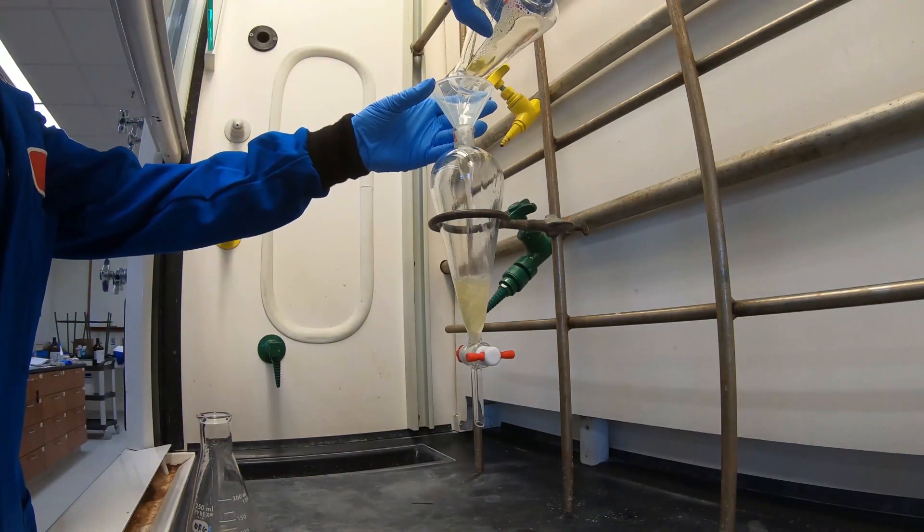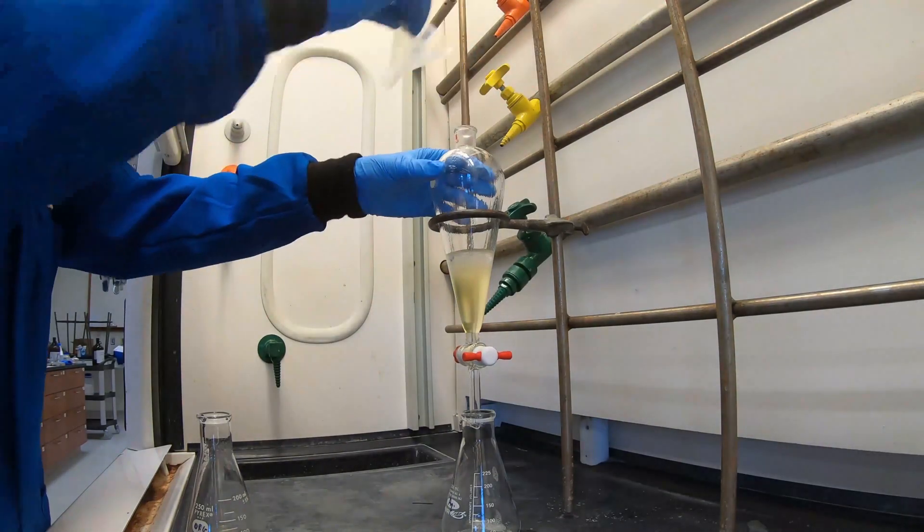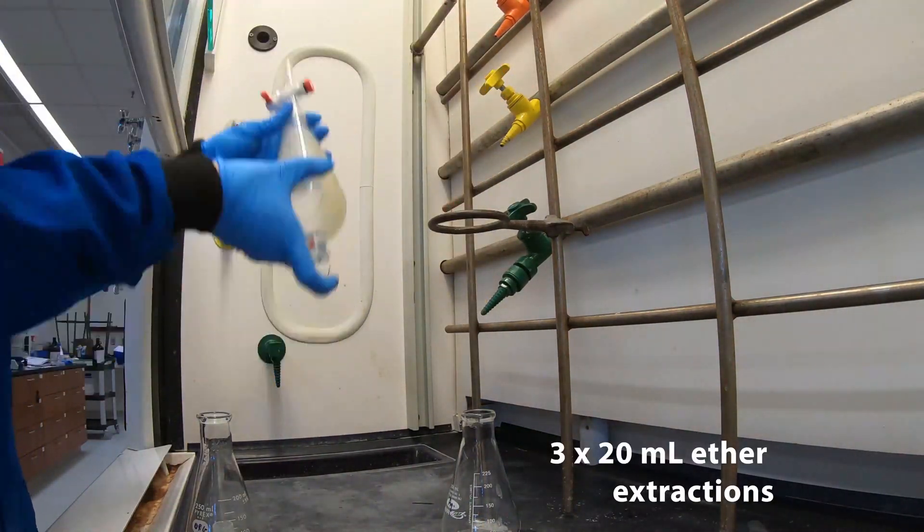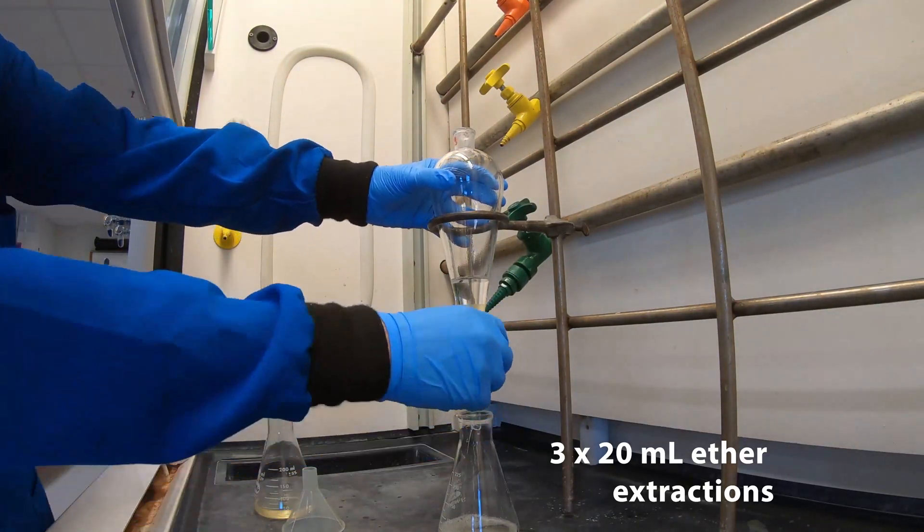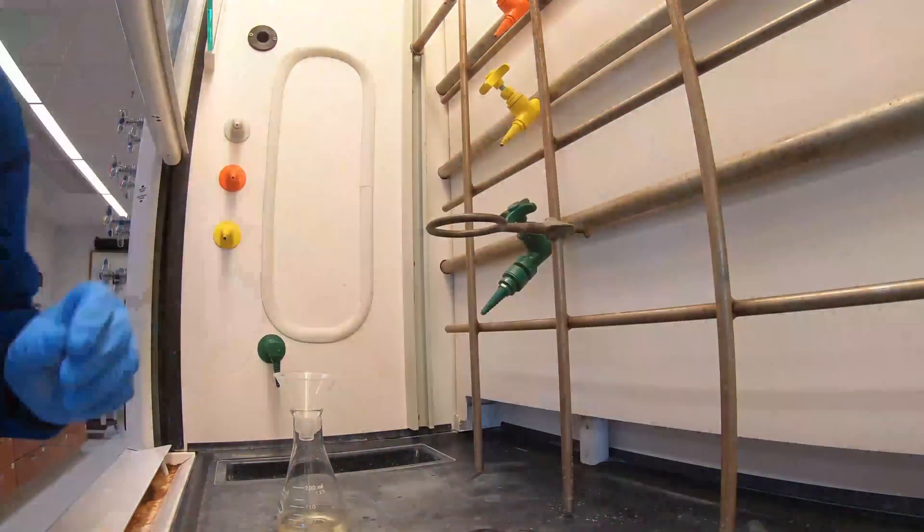Transfer the aqueous layer back into your separatory funnel. Add a fresh 20 ml of ether. Shake again. Again, collect the bottom layer in your aqueous flask. Now combine your organic layers into a single flask.